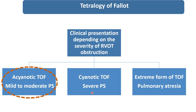If patient is having severe PS, then cyanotic TOF, and they develop cyanosis in early age, while the acyanotic TOF develops cyanosis almost six months to one year after.